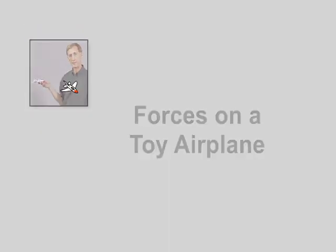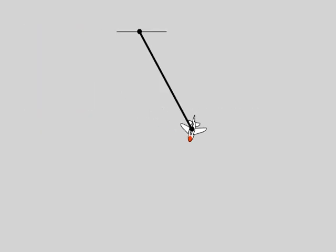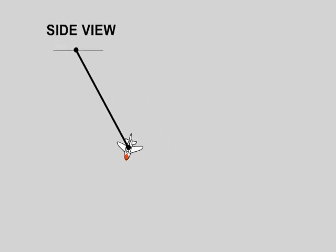Now let's take a look at the theory before we actually take the measurements. Let's look at the forces acting on the airplane from the side. Here we have the weight of the airplane, I'll just call that mg, it's mass times the acceleration due to gravity. And the string pulls on it with the tension force.